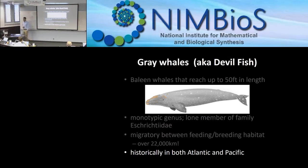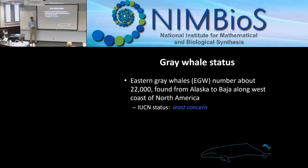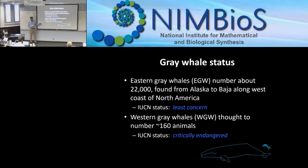I want to switch now to gray whales. Historically found in both the Atlantic and Pacific, they've been extinct in the Atlantic since the latter part of the 19th century. Today the eastern gray whale population along the coast of North America numbers around 22,000 whales and is classified as least concerned by IUCN. In contrast, the western gray whale population off the coast of Asia is critically endangered, with estimates of 140 to 180 individuals — certainly fewer than 250.